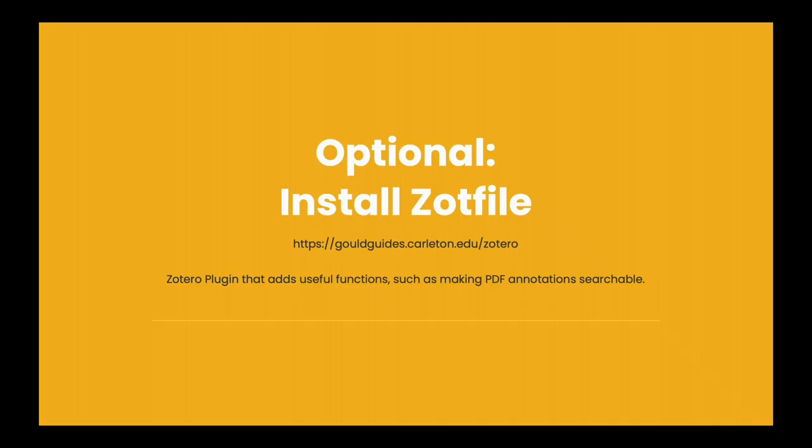Optionally, you may want to install a plugin called Zotfile. The installer and instructions are on our installation guide at gouldguides.carlton.edu/Zotero. This plugin does lots of great stuff, but one key feature is that it lets you extract annotations from your PDFs into searchable research notes within Zotero.